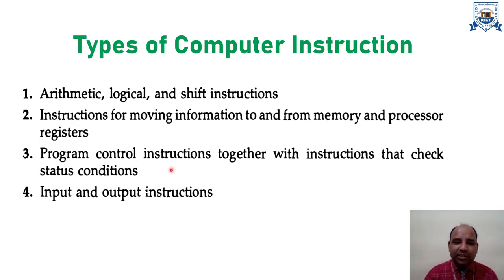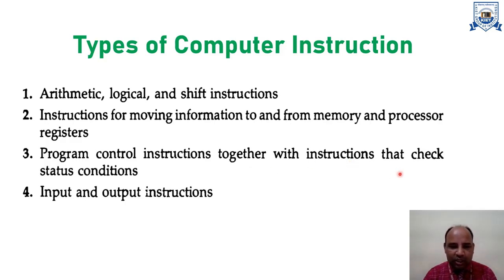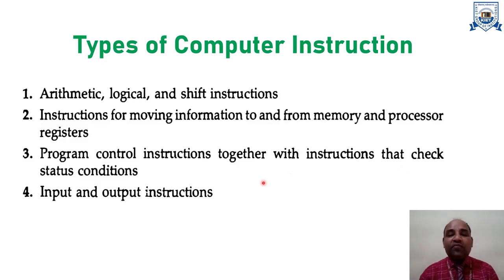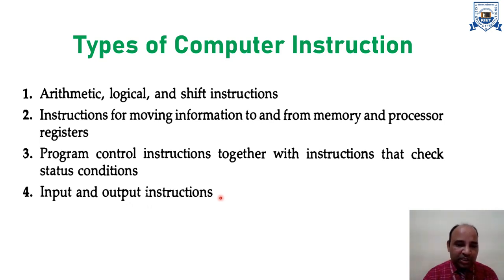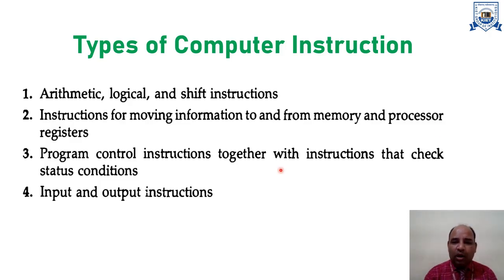The third type of instruction is the program control instruction. These are used by the control unit, which is a very important part of the CPU, and they are also used for generating control signals and checking the intermediate and final status conditions within the system. Finally, the fourth type is the input-output instruction, where input and output devices are involved in the instruction.